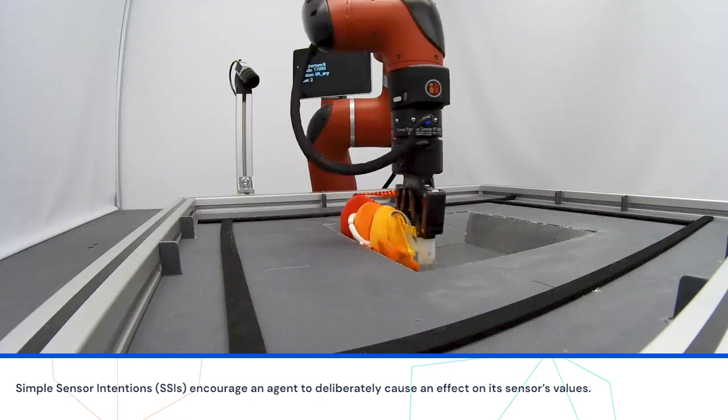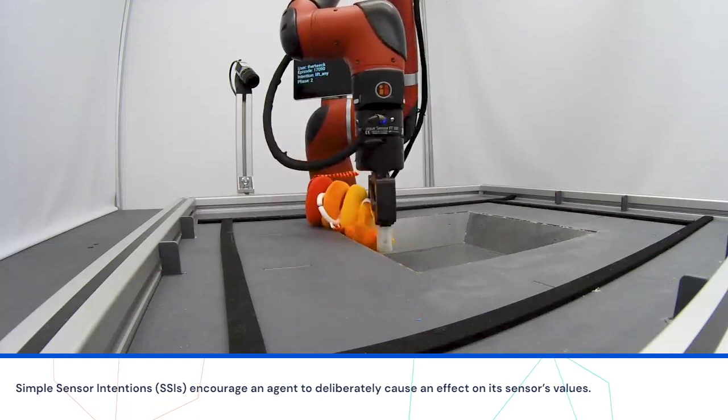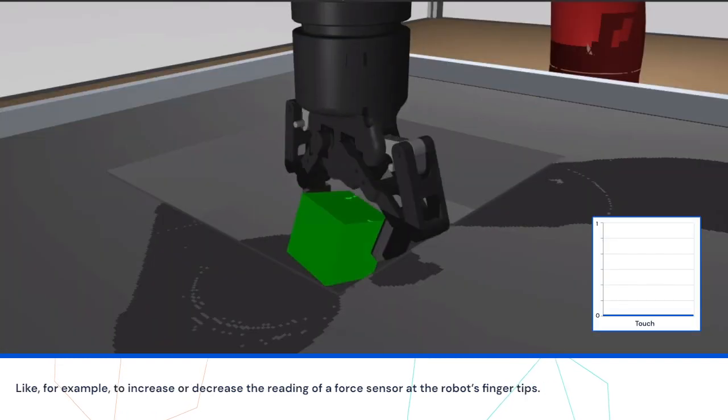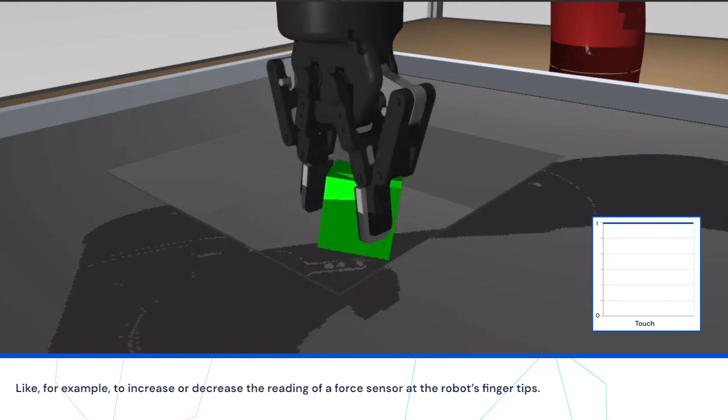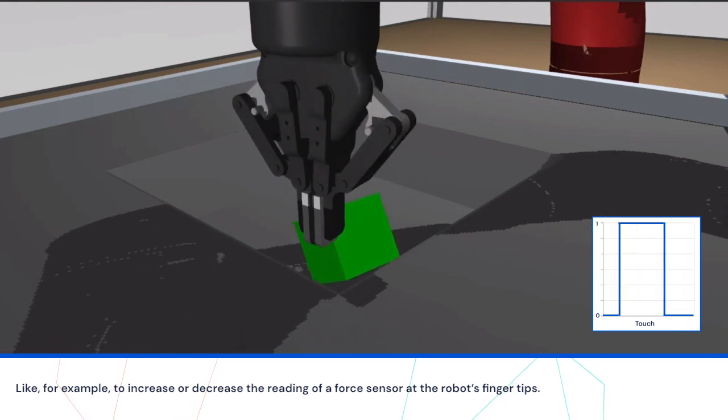Simple sensor intentions encourage an agent to deliberately cause an effect on its sensor values, for example, to increase or decrease the reading of a force sensor at the robot's fingertips.